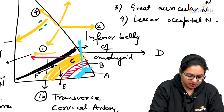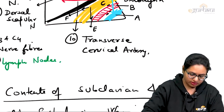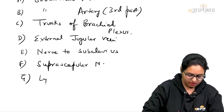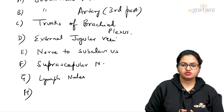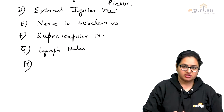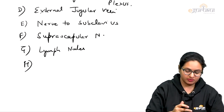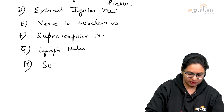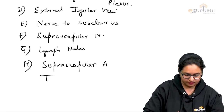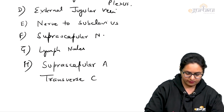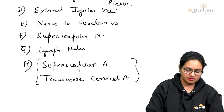Apart from this, we have lymph nodes present over here. Then the branches of the subclavian artery — those arising from the first part, as they traverse backwards, form the contents of the subclavian triangle. Those branches are the suprascapular artery and the transverse cervical artery.